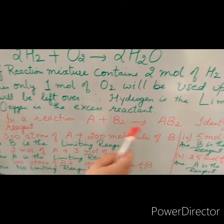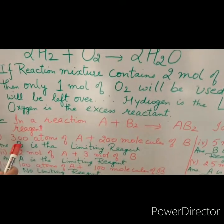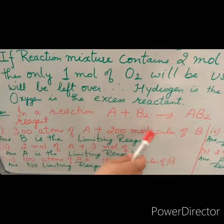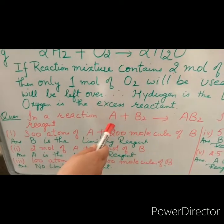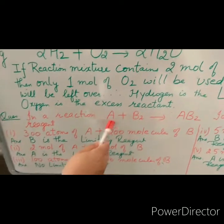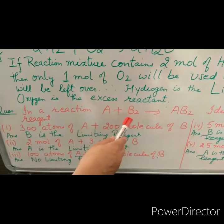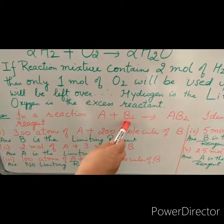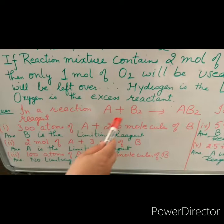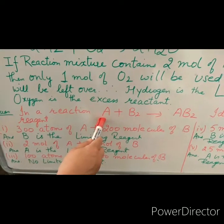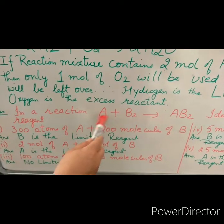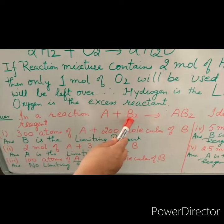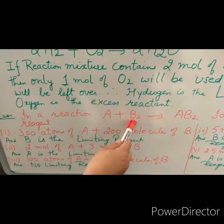Now let us see different questions. First: 300 atoms of A and 200 molecules of B₂. If we have 300 atoms of A and 200 molecules of B₂, then what is going to be the limiting reagent? 200 molecules of B₂ will react with 200 atoms of A. So A is the excess reagent and B₂ is the limiting reagent.